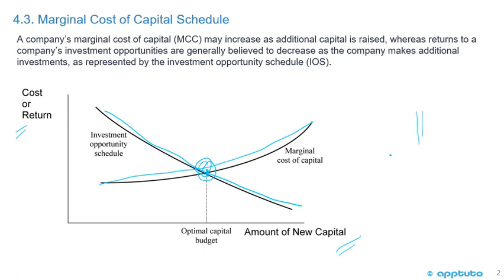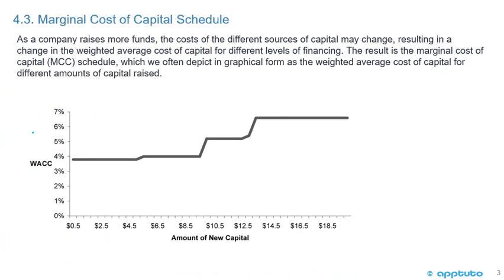It's important to understand that as a company raises more and more capital, the marginal cost of capital can increase. As a company raises more funds, the cost of the different sources of capital may change, resulting in a change in the weighted average cost of capital for different levels of financing.